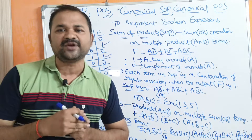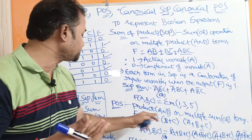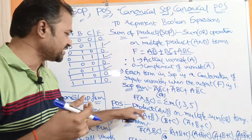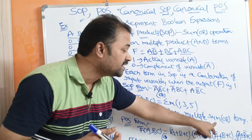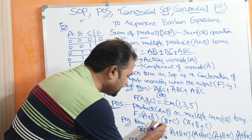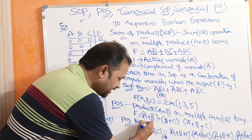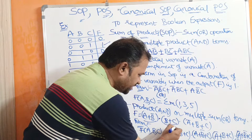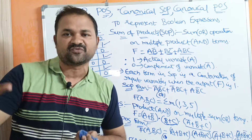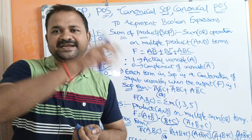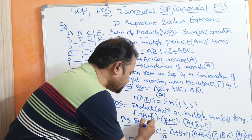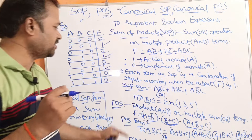Now let us see about POS. POS stands for Product of Sum. Product means AND operation on multiple sum terms, and sum means OR operation terms. So we perform AND operation on multiple OR terms. The name itself specifies the meaning.